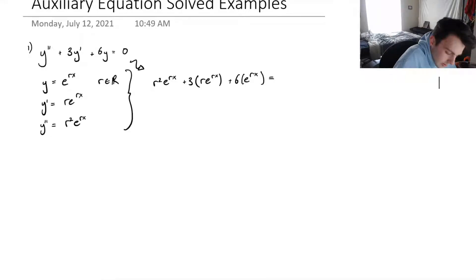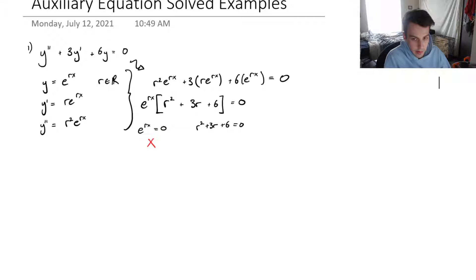So we're going to plug this back into our ODE. And it will become r squared times e to the rx plus 3 times re to the rx plus 6 times e to the rx. And this is all equaling zero. So we can factor out our e to the rx, and we're left with r squared plus 3r plus 6 equals zero.